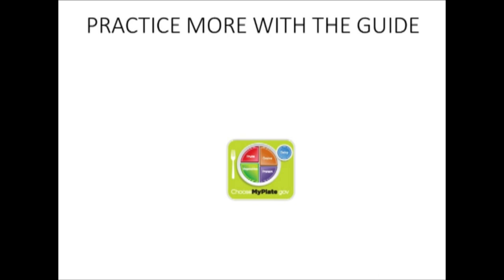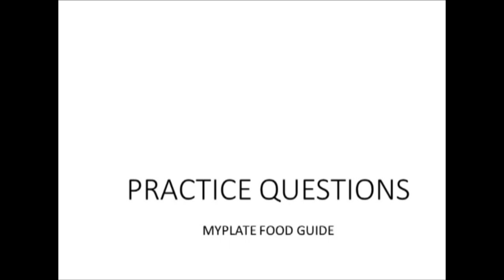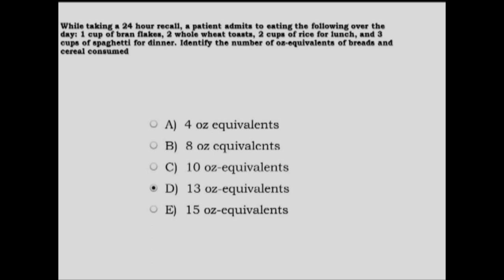Students need to become proficient at this assessment skill, as there will be a rapid response quiz to ensure successful performance on concept check one. Practice questions follow. Question one: while taking a 24-hour recall, a patient admits to eating one cup of bran flakes, two whole wheat toasts, two cups of rice for lunch, and three cups of spaghetti for dinner. The total ounce equivalent of bread and cereal: one cup of bran flakes = 1, two toasts = 2, two cups of rice = 4, three cups of spaghetti = 6, for a total of 13 ounce equivalents.